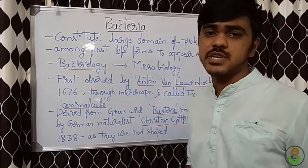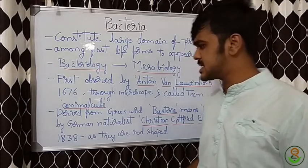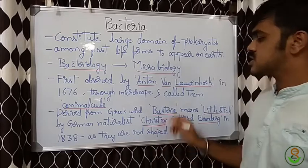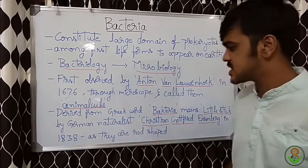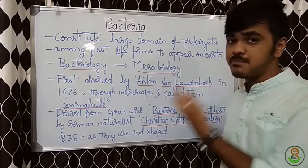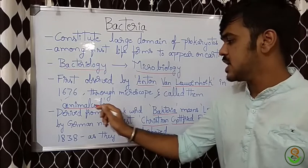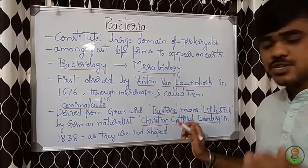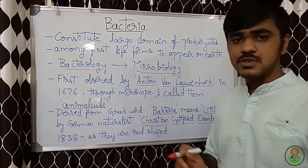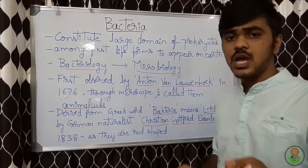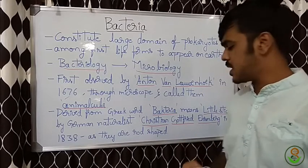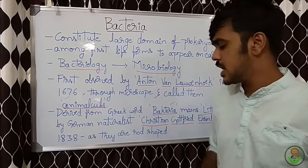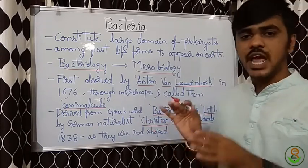Bacteriology comes under the branch of microbiology. The first time bacteria were observed was by a person named Anton van Leeuwenhoek in the year 1676, through the microscope developed by him. He called them 'animalculus.' Later, another person, Christian Gottfried Ehrenberg, observed them. Whatever Ehrenberg observed were rod-shaped, and as they looked like small sticks, he called them 'bacteria,' which means small sticks in Greek. Ehrenberg was a Greek naturalist who gave this name in the year 1838.